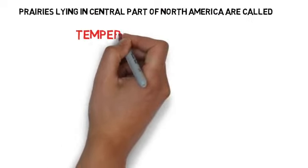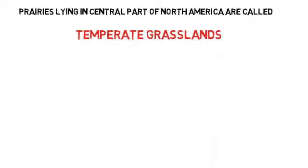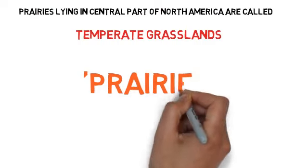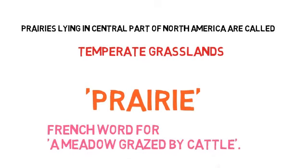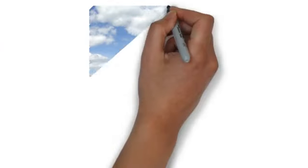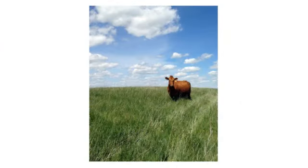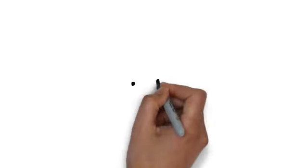Prairies that lie in the central part of North America are called temperate grasslands. Prairie is a French word which means a meadow grazed by cattle. As you can see in this picture, this is what they mean by the word prairie.